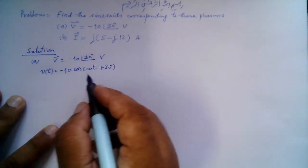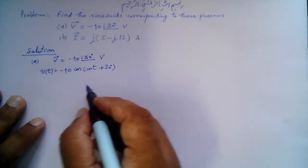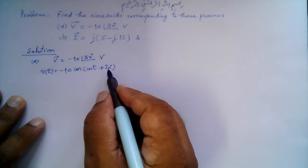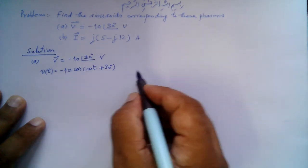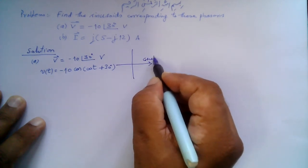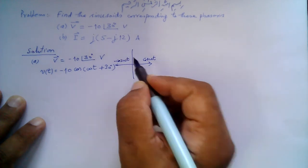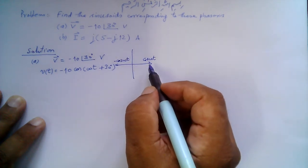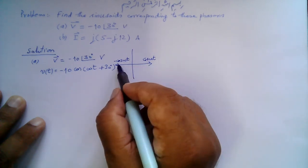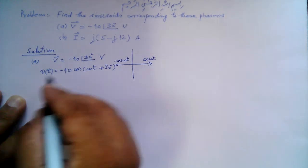To remove the negative sign and convert to a positive cosine function, we need to either add 180 degrees or subtract 180 degrees from the phase angle. Looking at this graph, this is cos(ωt) and this is minus cos(ωt). To go from minus cosine to positive cosine, we can go in one direction using plus 180 degrees or in the other direction using minus 180 degrees.